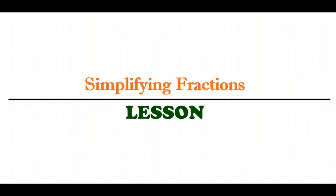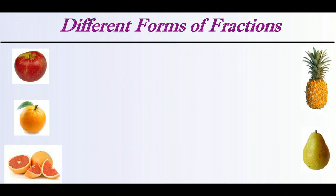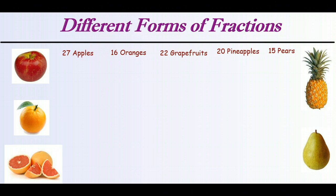In order to simplify them, let's take a look at the context of a big basket of fruit. In that basket we have 27 apples, 16 oranges, 22 grapefruits, 20 pineapples, and 15 pears. Go ahead and pause the video and write each of the types of fruit as a fraction of the whole. The first thing we have to do is figure out how much fruit we have total. If we add 27 plus 16 plus 22 plus 20 plus 15, we end up with 100.